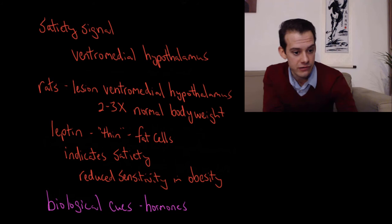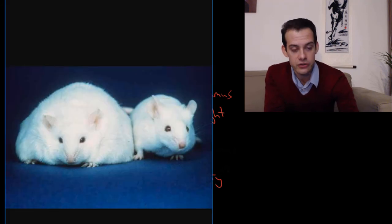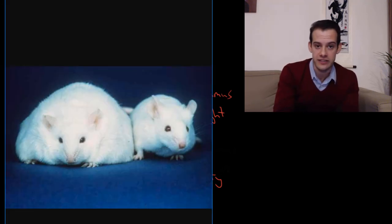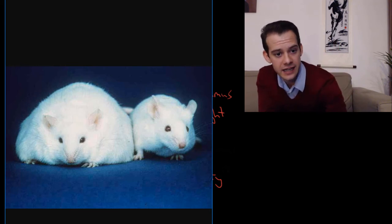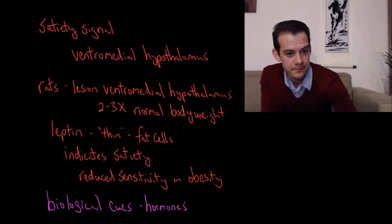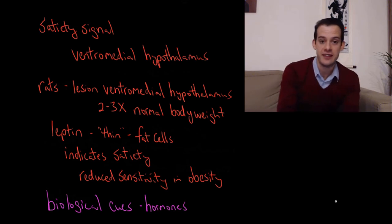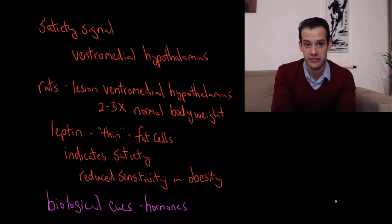And rats with lesions to the ventromedial hypothalamus can become two to three times the normal body weight of rats of their breed. And here's a picture of one of these rats with a lesion to the ventromedial hypothalamus. You can see he's become quite large.